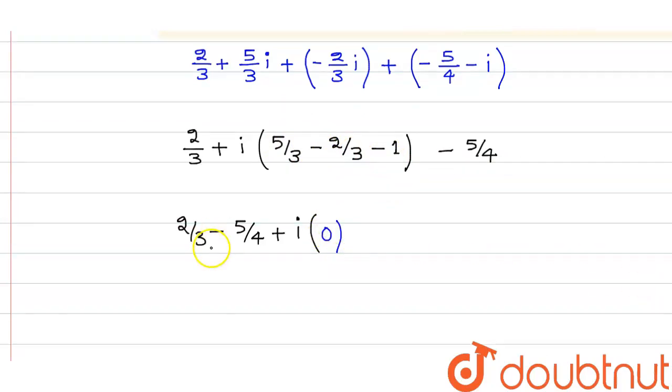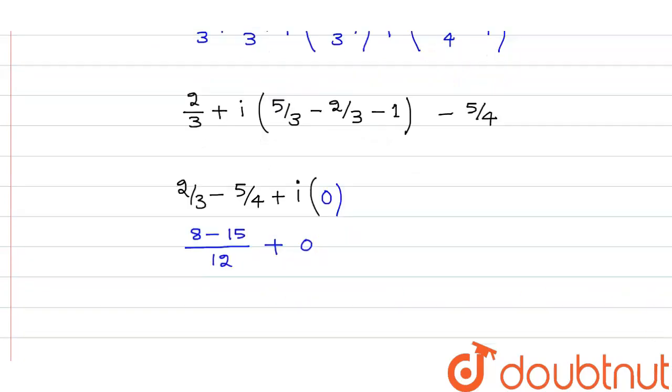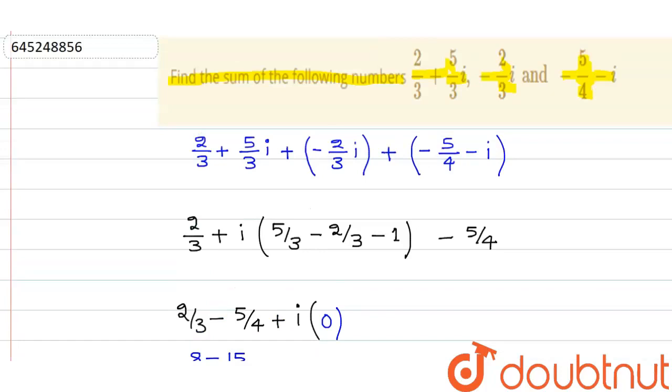And this thing is what, if I take the LCM, so we have what minus 7/12. So sum of this thing is equal to what, minus 7/12.